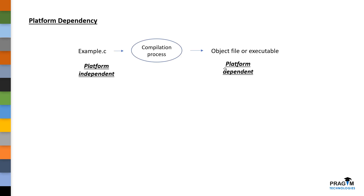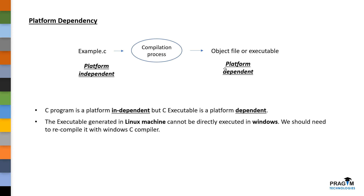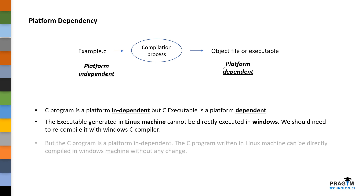C applications are platform dependent. When we say about platform, it is the operating system and the underlying hardware on which C is going to execute. The executable files generated on a Linux machine cannot be directly executed on a Windows machine — we need to recompile them again with a Windows C compiler. But the program which is written on a Linux machine can be directly recompiled without doing any changes. So we can say that C source code is machine independent, but C executables are not machine independent.